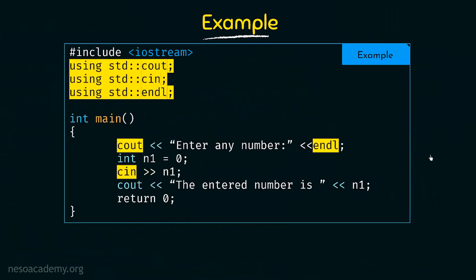Let's take another example that also uses endl. Normally we write std::endl, but here we specify using std::endl at the top, just like we did for cout and cin. So we specify all three namespaces — for cout, cin, and endl — and because of that, when writing the program body we don't have to explicitly mention the namespaces again. This program is correct and will compile successfully. One limitation here is that we have to specify each name individually.